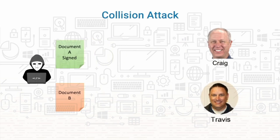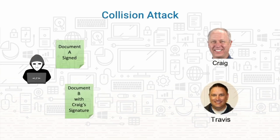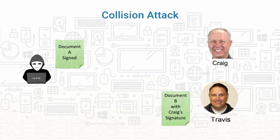The hacker then takes Craig's signature from that document, attaches it to a bad document, and sends that to Travis. Because the documents have the same hash, Travis's software is unable to detect that there's anything wrong and it looks totally legitimate. The problem with this attack is the difficulty of generating two documents that have the same hash.